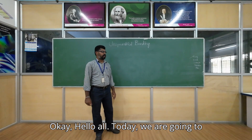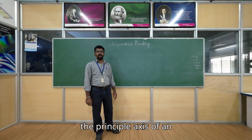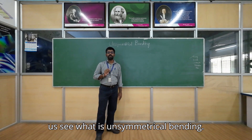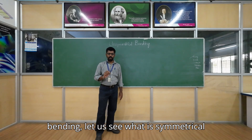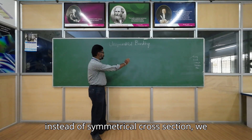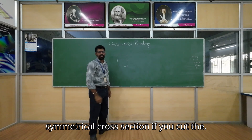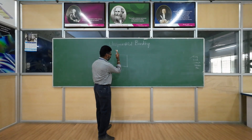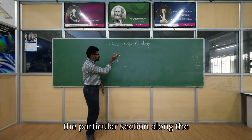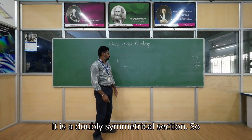Today we are going to see unsymmetrical bending — how to compute the principal axis of an unsymmetrical cross section beam. Before going to the experiment, let us first understand symmetrical and unsymmetrical cross sections. A rectangular section is an example of a doubly symmetrical cross section. If you cut the section along either axis, you get two equal halves.